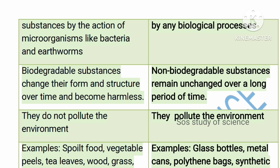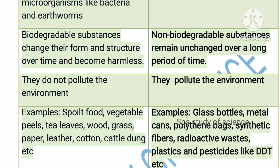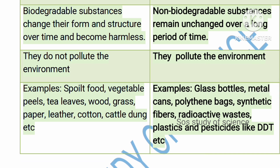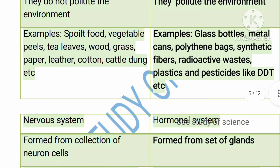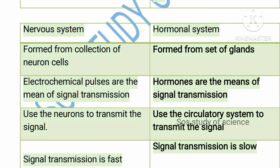Biodegradable substances change their form and structure over time and become harmless — they can easily mix with the soil. Non-biodegradable substances do not change; they remain unchanged in the soil over a period of time. Biodegradable substances will never pollute the environment whereas non-biodegradable substances will pollute the environment. Examples of biodegradable: spoiled food, vegetable peels, tea leaves, wood, grass, leather, cotton, cattle dung. Examples of non-biodegradable: glass bottles, metal cans, polythene bags, synthetic fibers, radioactive waste, DDT.